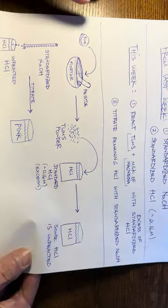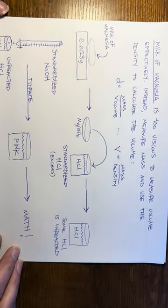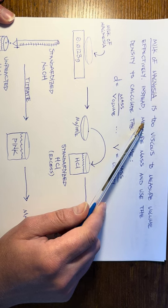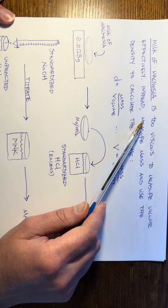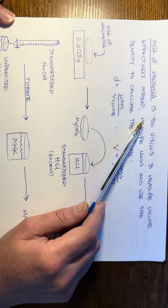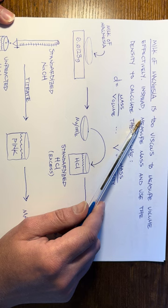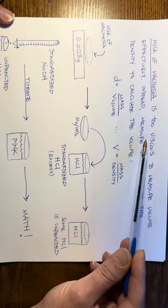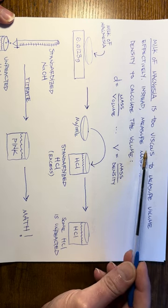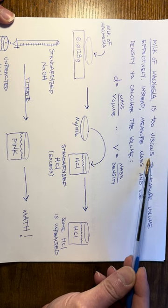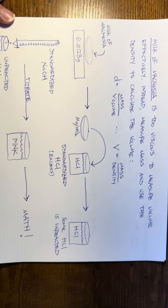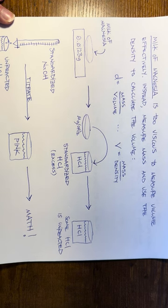With milk of magnesia, we do something similar, but there are a couple of practical considerations. Milk of magnesia is a liquid — actually a suspension — because magnesium hydroxide is not very soluble in water. It's like a chalky powder suspended in water, which makes it very viscous. It's too viscous to measure by volume effectively; it won't pipette well because it's so thick. So we can't measure an exact volume of milk of magnesia.